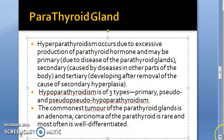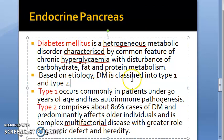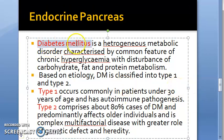For the parathyroid gland, though not heavily exam-tested, you'll cover hyperparathyroidism and hypoparathyroidism. Moving on to the endocrine pancreas — the pancreas has exocrine and endocrine parts — we will study diabetes mellitus type 1 and type 2.